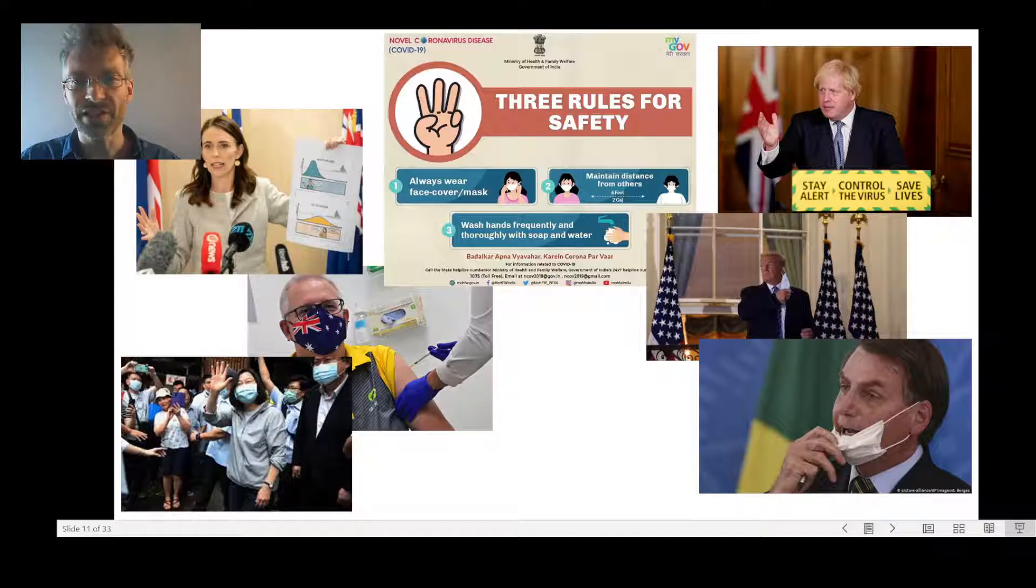A first question is could it be that the level of the subjective norm support in a population helps to strengthen the subjective norm effects at the individual level? So it's an interaction between whether somebody thinks that others support a behavior and then in the aggregate, in the population, people actually do hold those ideas as well.